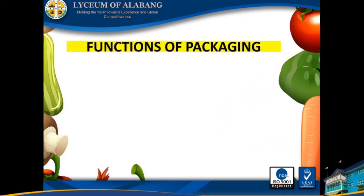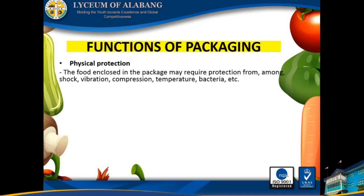Functions of packaging. The principal roles of food packaging are: physical protection — the food enclosed in the package may require protection from shock, vibration, compression, temperature, bacteria, etc.